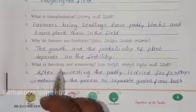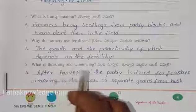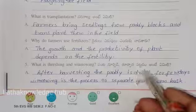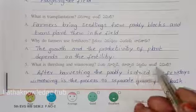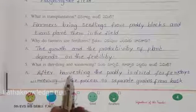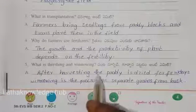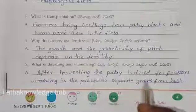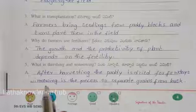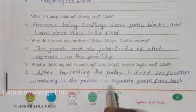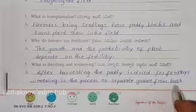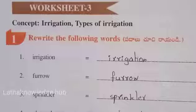What is threshing and winnowing? After harvesting, the paddy is dried for a few days. Winnowing is the process to separate grains from husk.